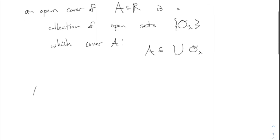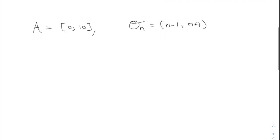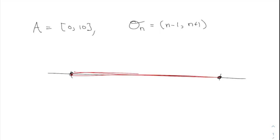For example, if I had something like A equals the closed interval from 0 to 10, then I could say O-N equals the interval from N-1 to N+1. This is an interval from 0 to 10 including the endpoints — that's my A, the original set. And then it is covered up by these intervals O-N. So O-0 would be an open interval, and O-1 goes from 0 to 2.